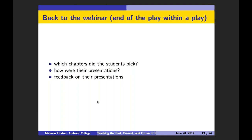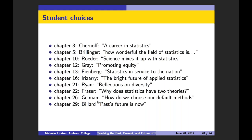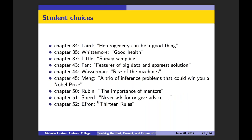This semester, my students' choices hit a number of the chapters. With 20 students and 51 chapters, there's potential for them all to be unique, but it turns out there was some overlap. Certain topics were very popular — I had to go back to some students whose first three choices had been selected by someone who submitted earlier. You can see a number of choices from the earlier chapters, which are often life stories and aspects of thinking about the big picture for statistics, then moving to the later part of the book with more career advice for students.